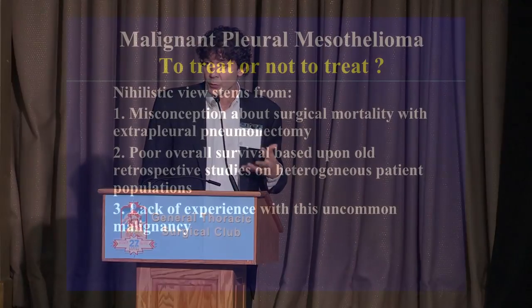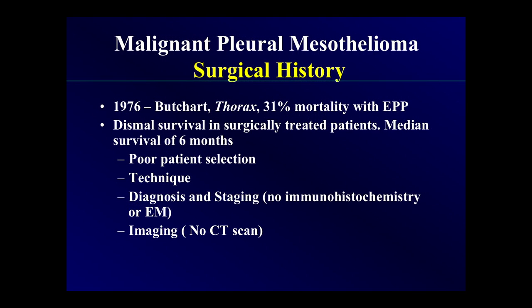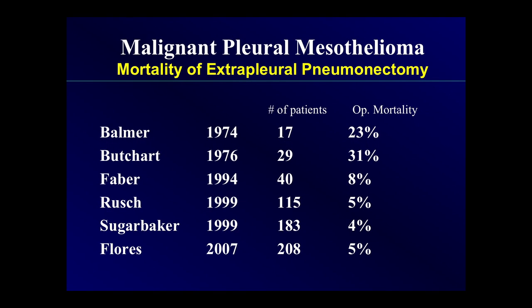There's a big misconception about surgical mortality with extrapleural pneumonectomy. We've shown time and again it can be done safely. The old data predates immunohistochemical staining and electron microscopy, so you're comparing apples and oranges — how do you know how many were actually mesothelioma versus adenocarcinoma? Back then it was just chest X-rays; now we have CT scan and PET scan. When doctors have zero experience treating something, they tend to want to do no harm. One of the biggest old studies showed 31% mortality — of course patients refused surgery. Nowadays we can get that mortality down to four or five percent.